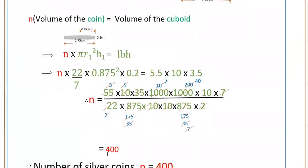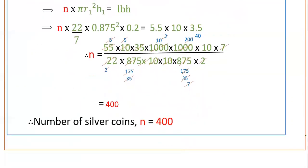Then you will get 400. n is 400. Therefore number of silver coins n equals 400.